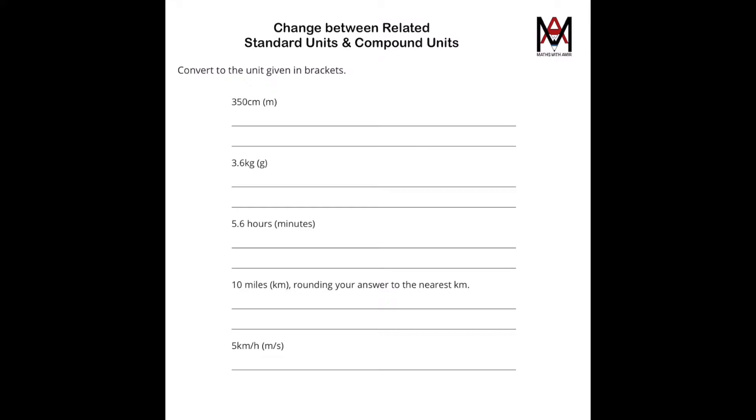Standard units are everything you see in the first four questions. In these questions, before and after the conversion, these are all in standard units. And the last question, this is a compound unit, as it's kilometer per hour, and after it's asking us for meters per second.